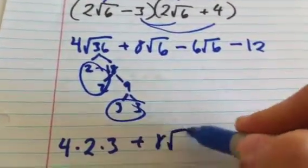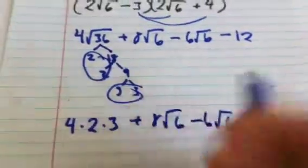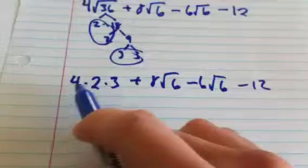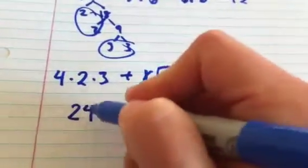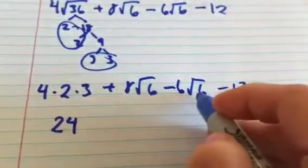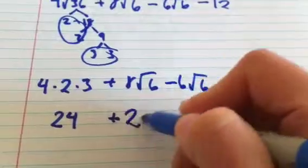And this, I'll just leave the rest. So now 4 times 2 times 3 is 24. 8 root 6 minus 6 root 6 is 2 root 6.